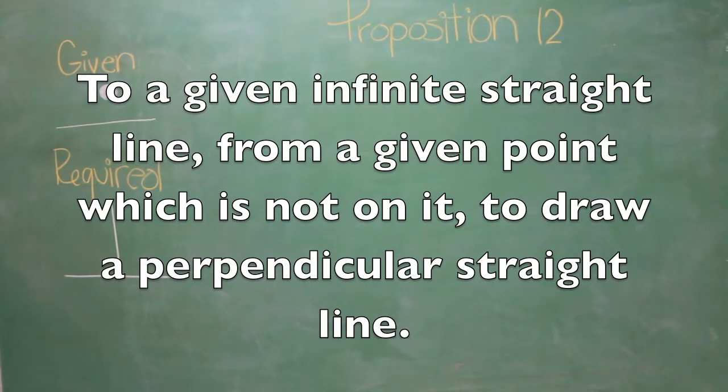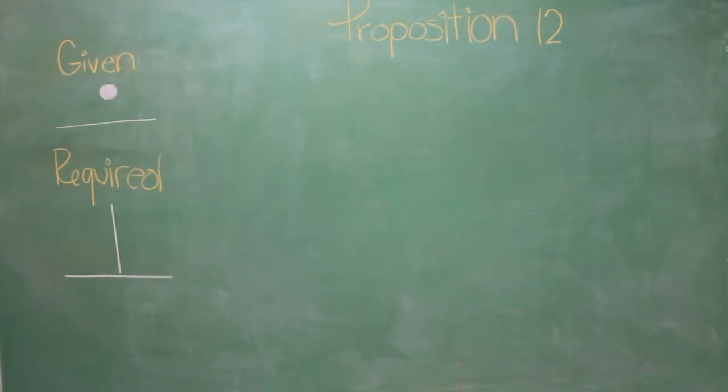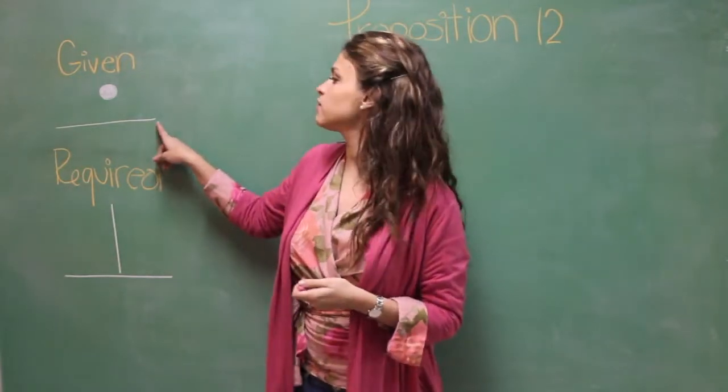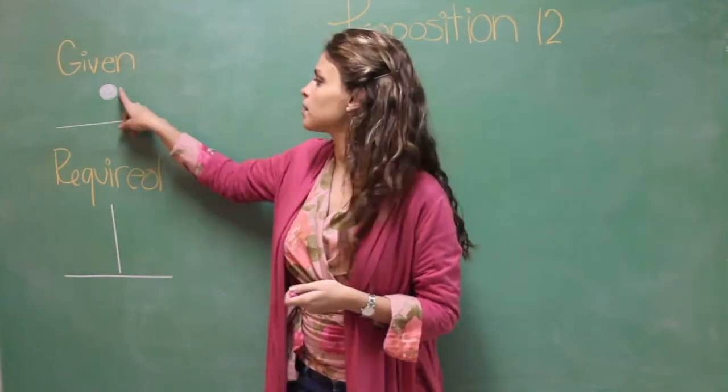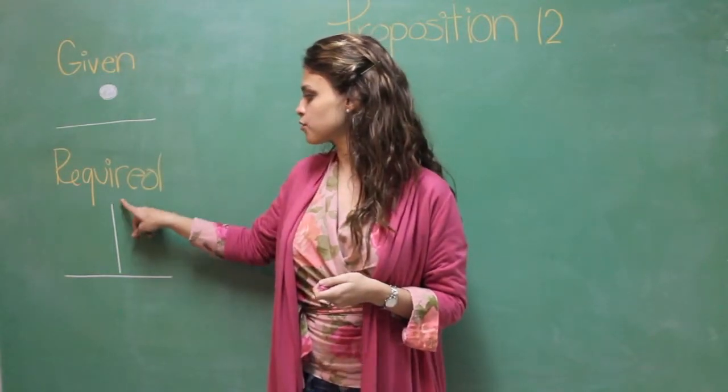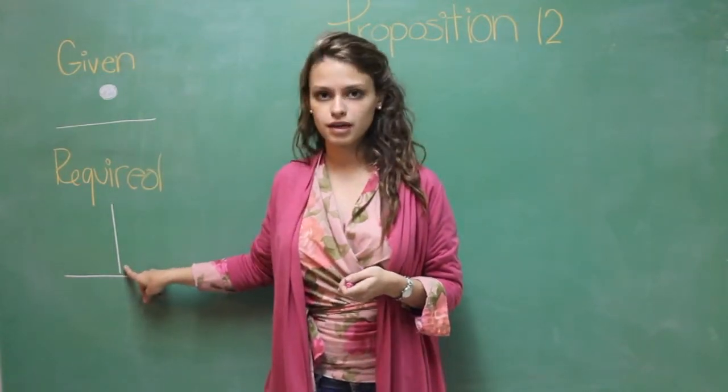To a given infinite straight line from a given point which is not on it, to draw a perpendicular straight line. What is given is an infinite straight line and a point that is not on it. And what is required is to draw a perpendicular straight line.